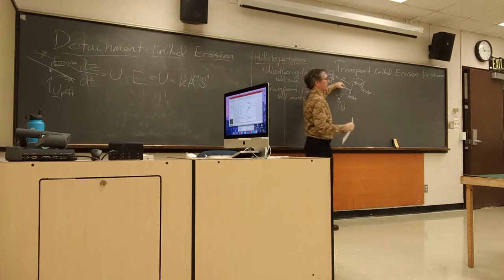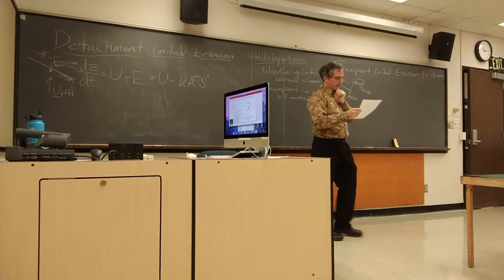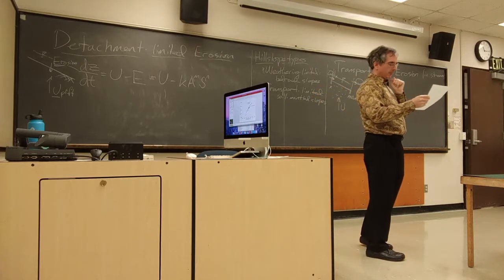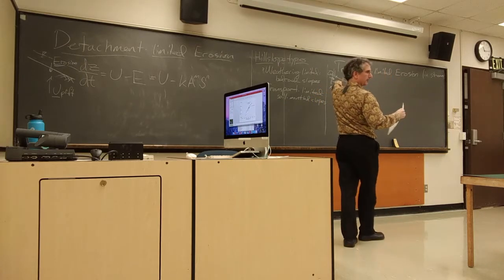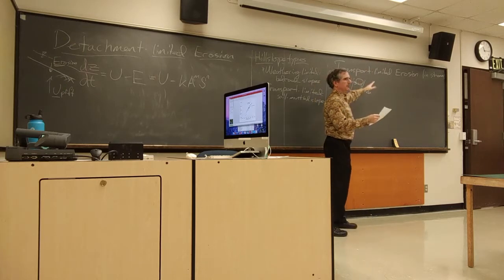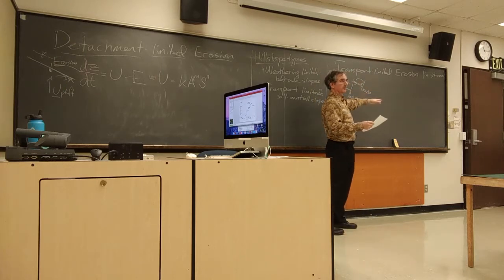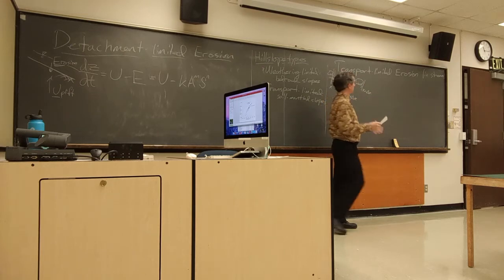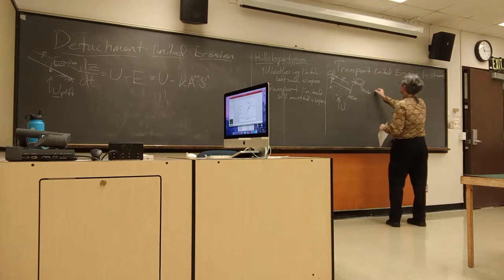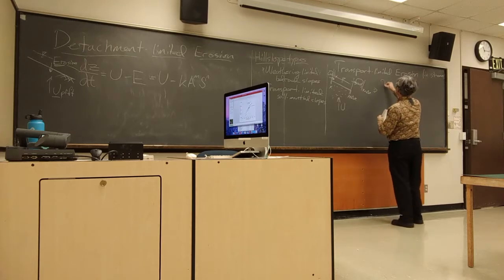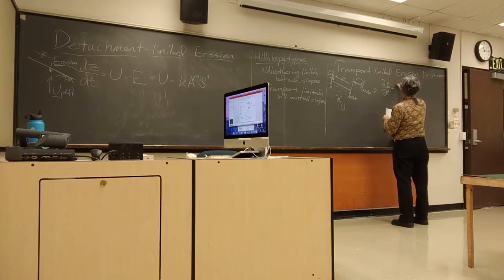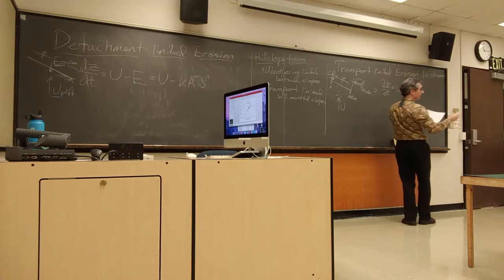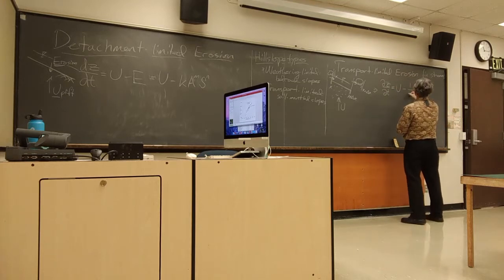So now any change in that bed elevation is contingent on the downstream change in transport capacity, just like with our hill slope diffusion. So, that is, our mass balance assumes a, what should be a relatively familiar form at this point.